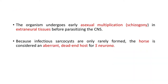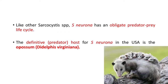The organism undergoes early asexual multiplication, also known as schizogony, in extraneural tissues before parasitizing the CNS. Because infectious sarcocysts are only rarely formed, the horse is considered an aberrant or dead-end host for Sarcocystis neurona. Like other Sarcocystis species, S. neurona has an obligate predator-prey life cycle, and the definitive host or predator host for Sarcocystis neurona in the USA is the opossum.